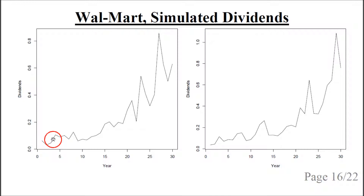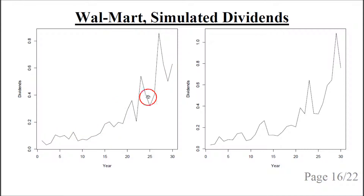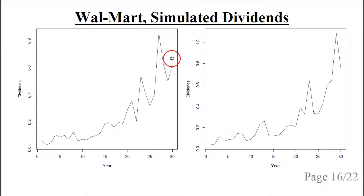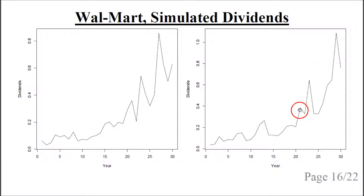The dividends are more irregular — they start fairly close to zero and end up at maybe 0.6, but quite irregularly. Both simulations have a tendency to increase roughly exponentially because equity is increasing exponentially and dividends are related to equity, but they are jagged and somewhat different.